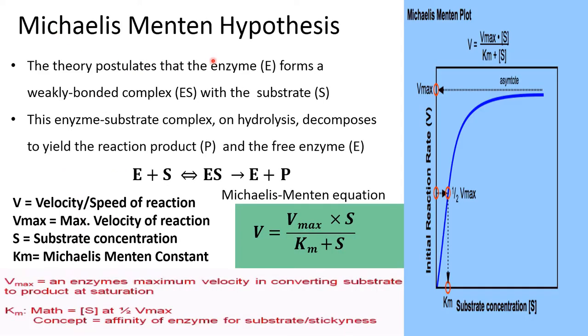According to this theory, the enzyme forms a weakly-bonded complex with the substrate. This enzyme-substrate complex on hydrolysis decomposes to yield a reaction product and free enzyme. This is the Michaelis-Menten equation.